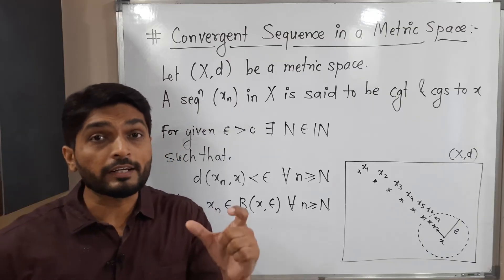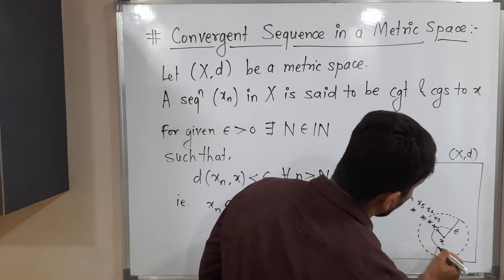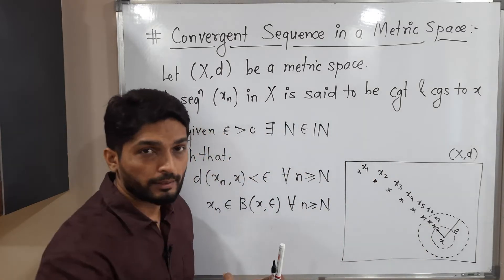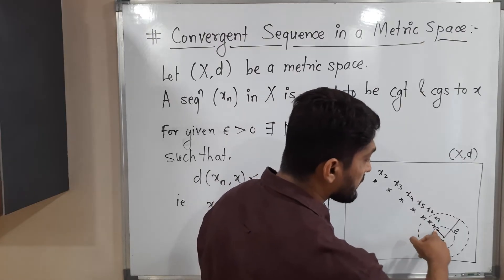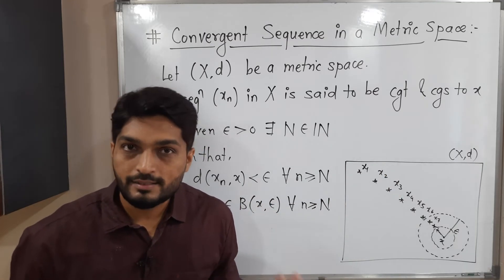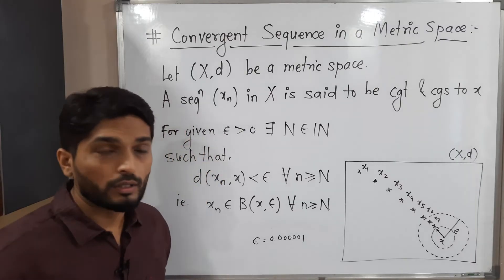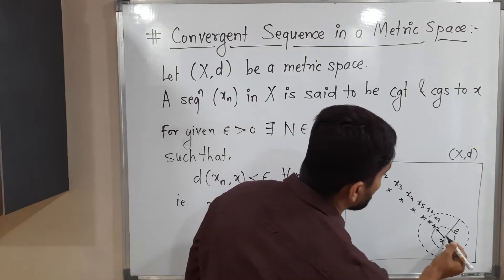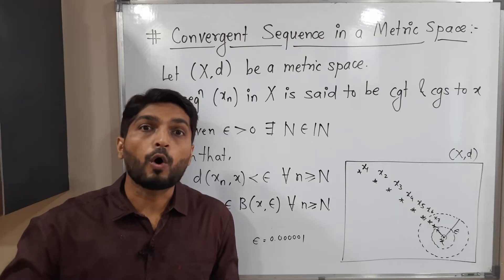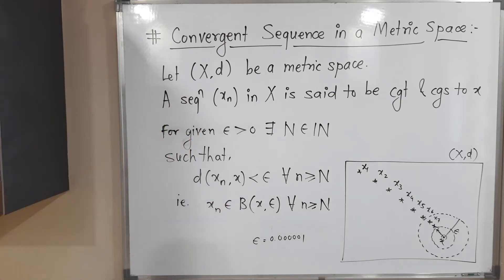Let us see what happens if we reduce epsilon. If epsilon is reduced, we get a smaller ball. In that case X7 and X8 may lie outside the ball, but X9 and all remaining elements lie inside. If you reduce epsilon, N will increase, but the nature remains the same. For a very small epsilon like 0.00001, N can be extremely large — like 10 lakhs — but all remaining points will still lie inside the ball.